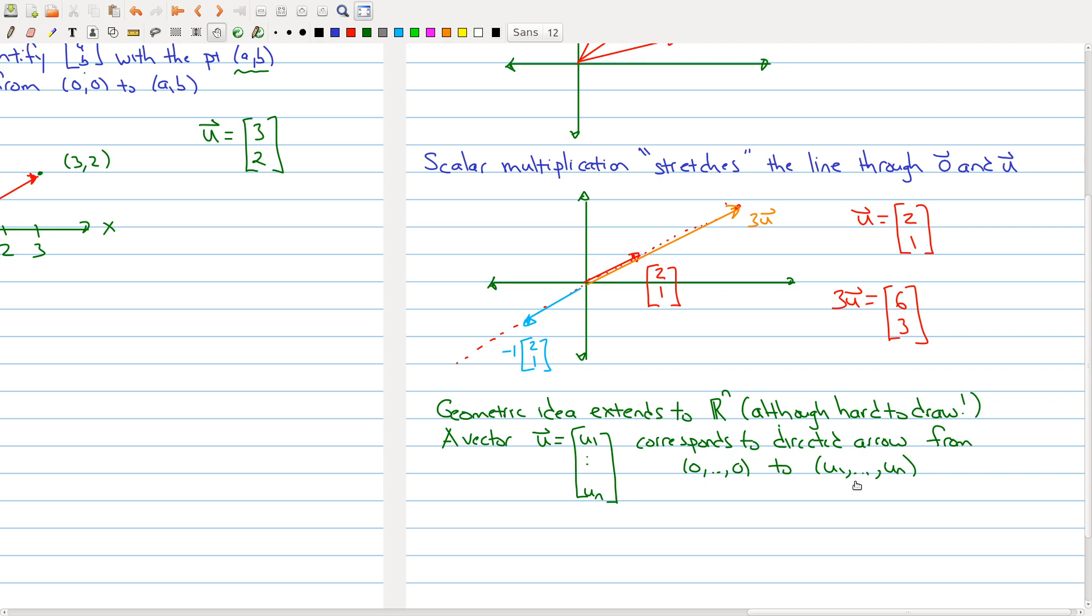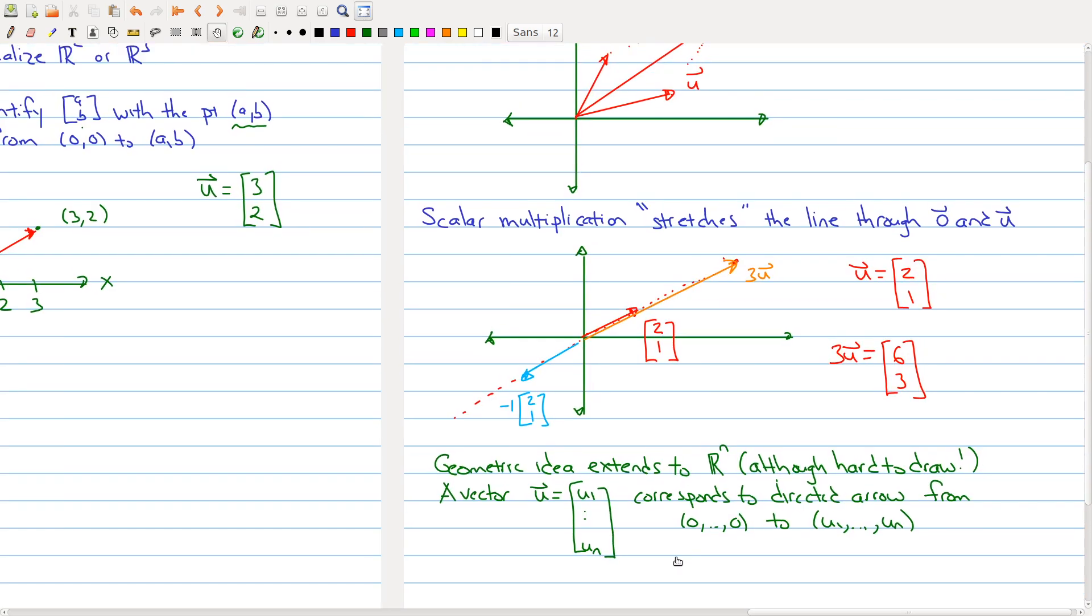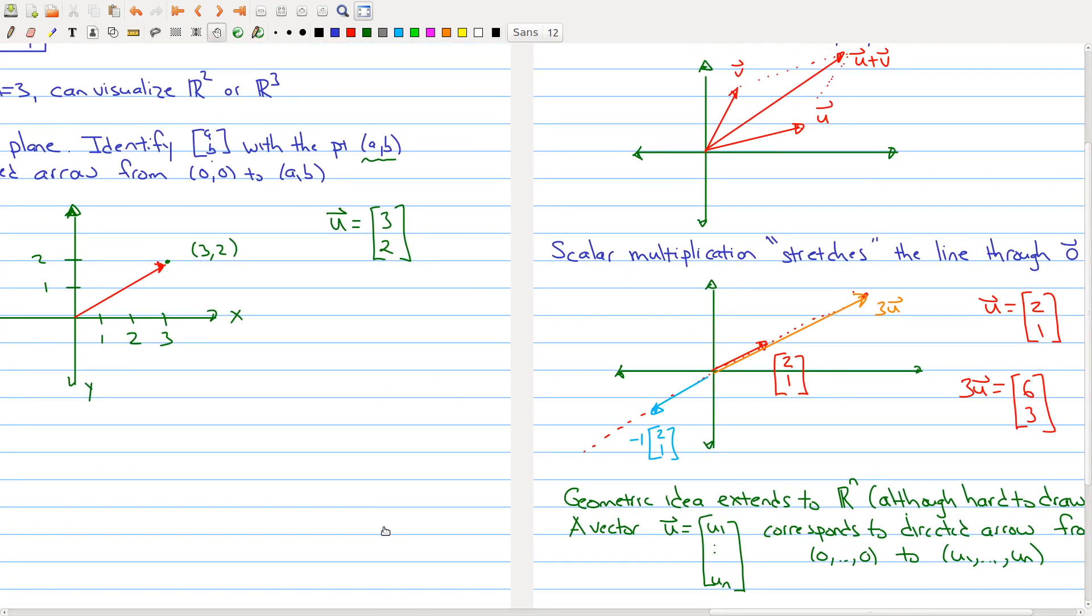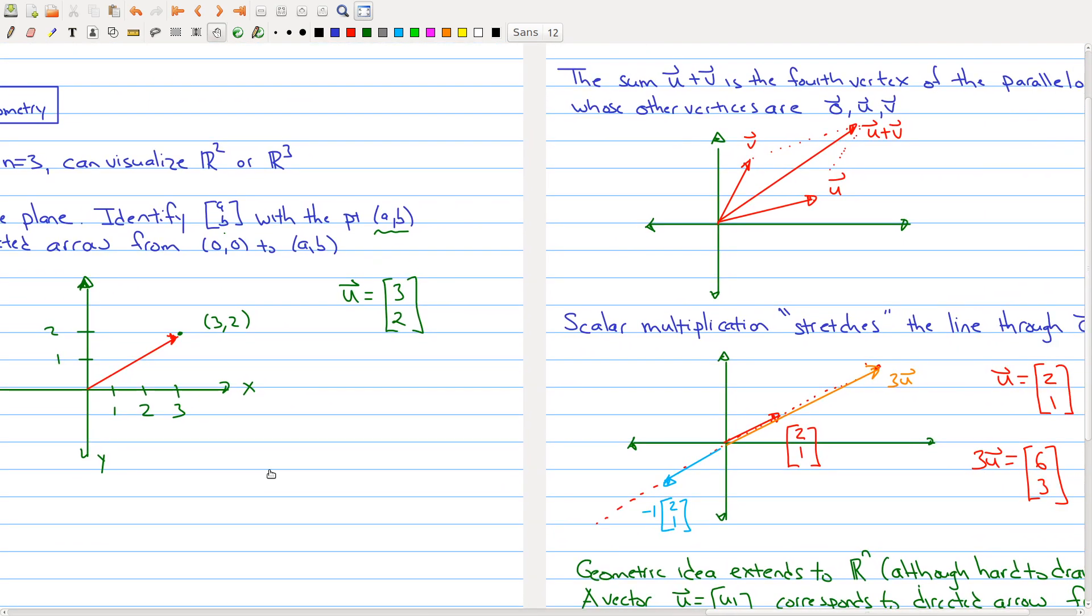So the takeaway here is that even though we have this notion of vectors, which seems very kind of algebraic, in certain cases, especially in R2 and R3, which I haven't drawn any examples today, we have also some geometric meaning as well. And sometimes this geometric information can give us some intuition about what's happening with respect to vectors.